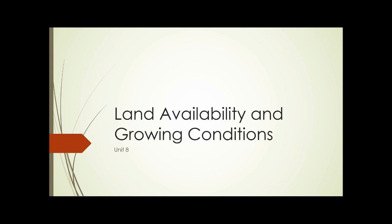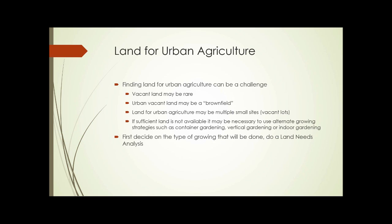Unit eight: land availability and growing conditions, part one — land availability. We're going to discuss land for urban agriculture in this unit.